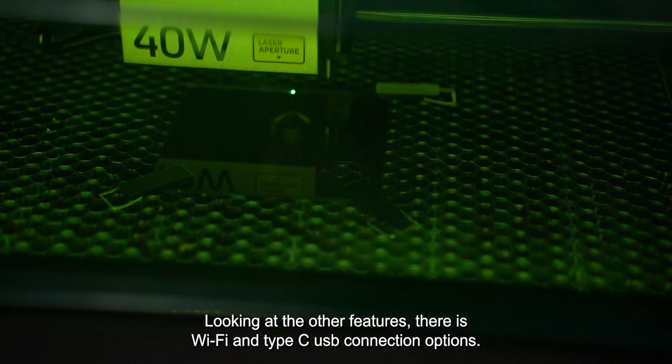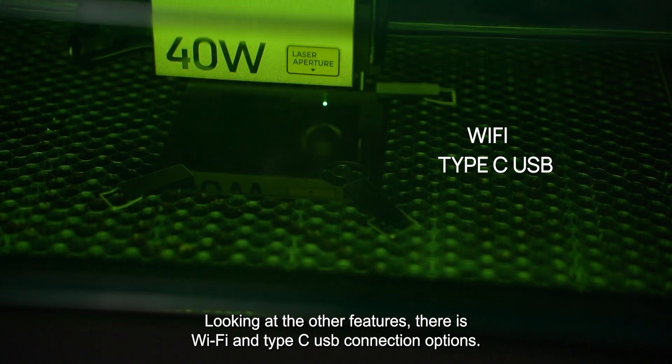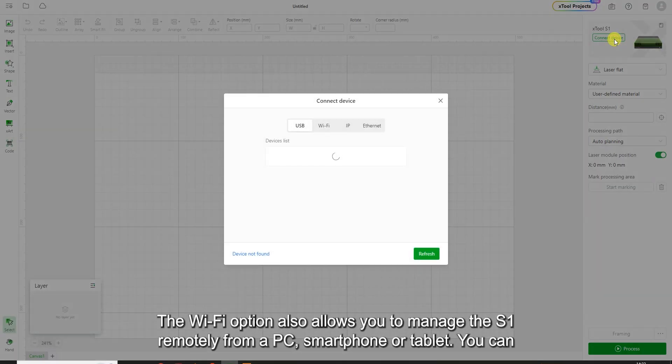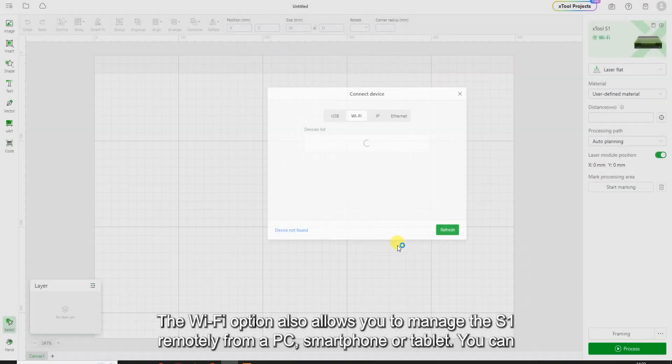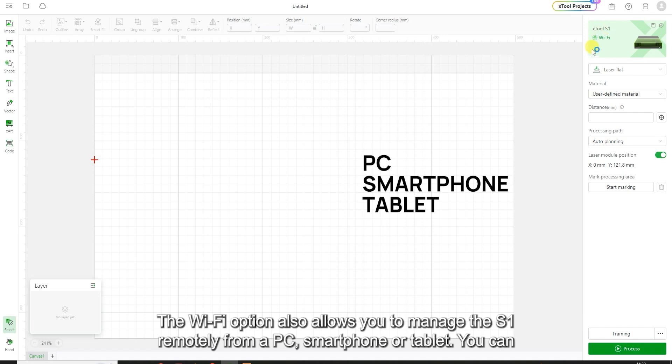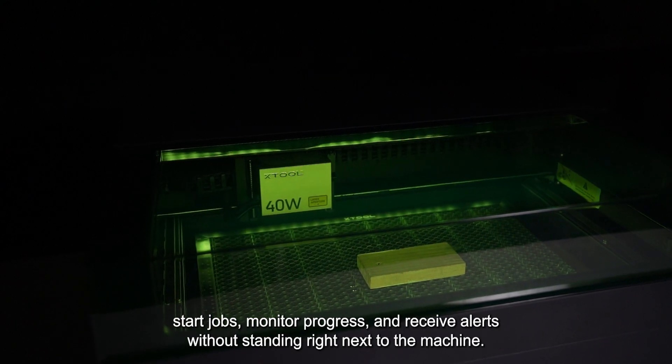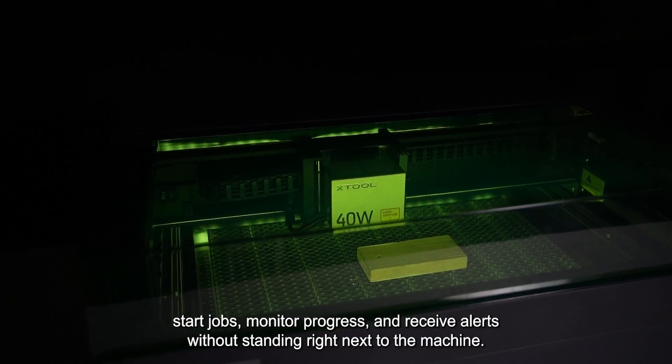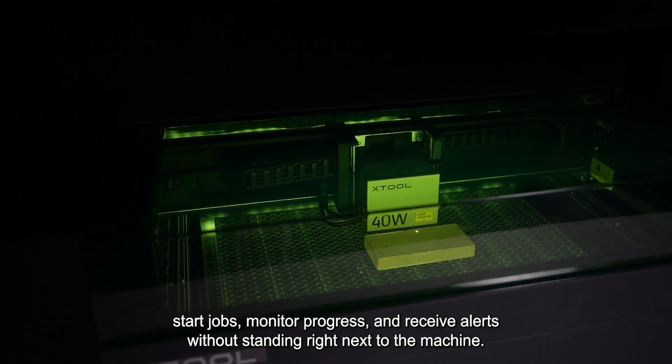Looking at the other features, there is Wi-Fi and Type-C USB connection options. The Wi-Fi option also allows you to manage the S1 remotely from a PC, smartphone or tablet. You can start jobs, monitor progress and receive alerts without standing right next to the machine.